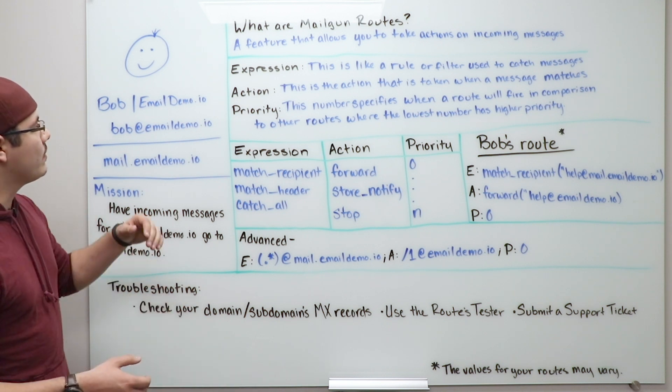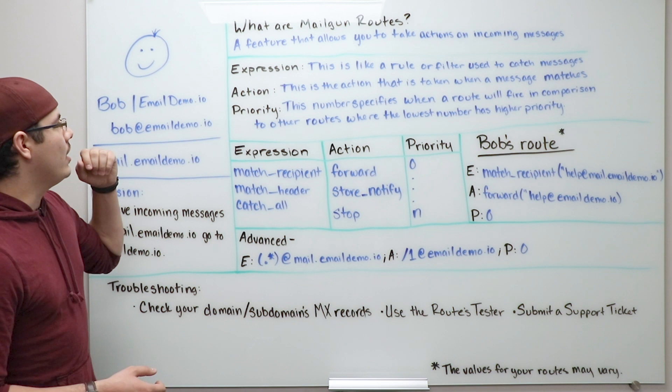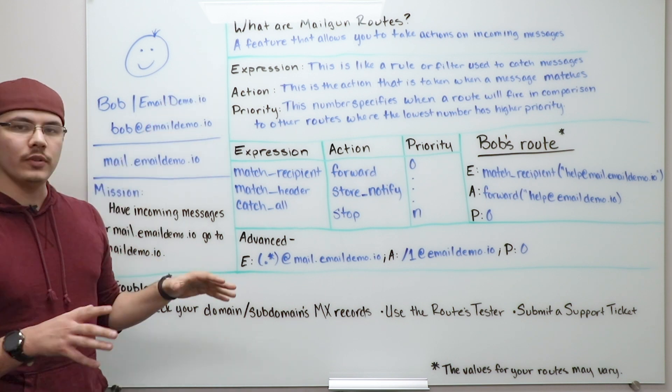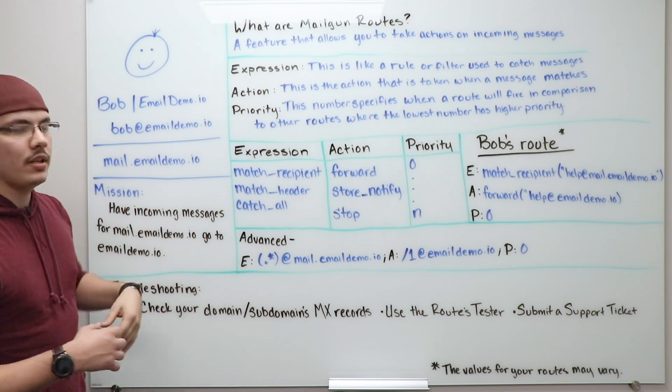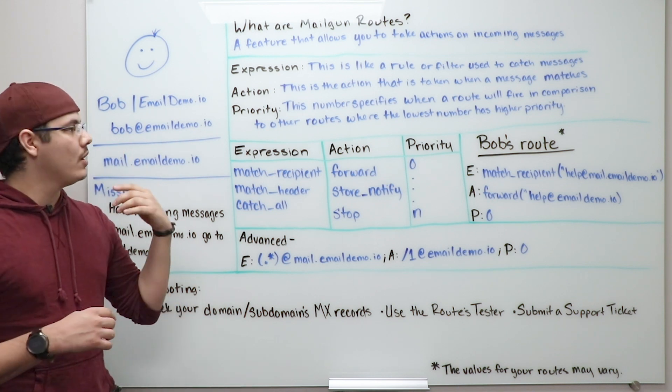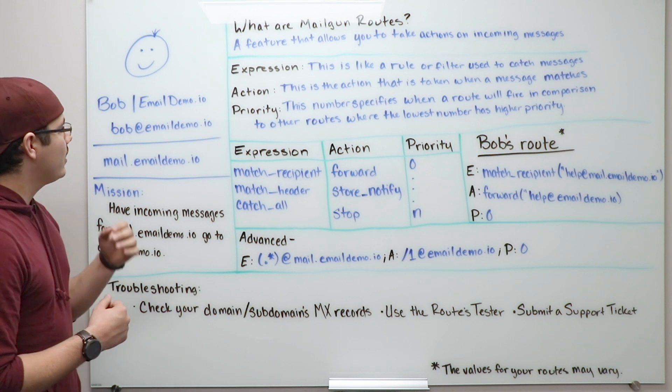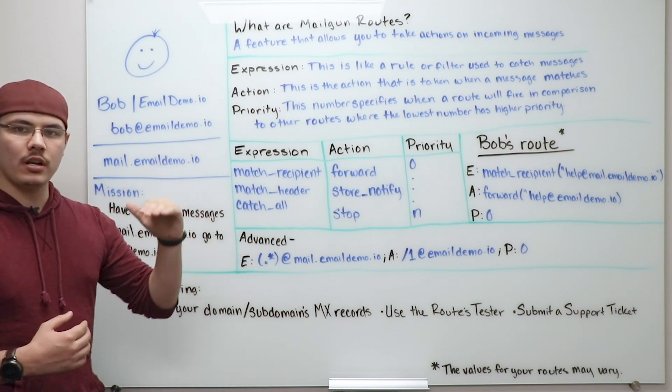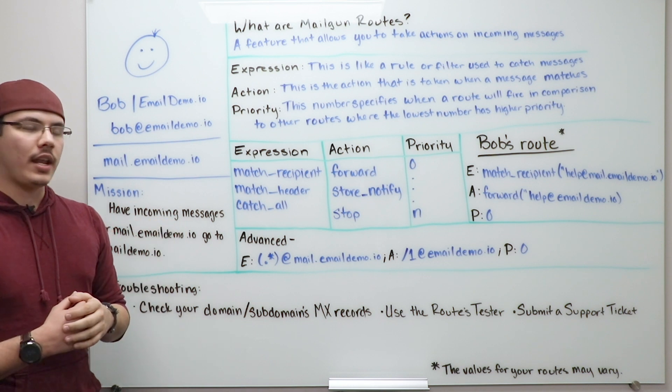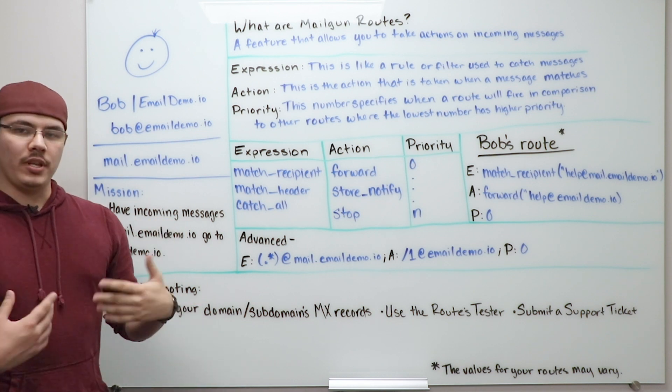So a route is comprised of three different things: an expression, which is like a rule or filter used to catch messages that are coming in; an action, this is the action that is taking place after we've already caught the message; and the priority is basically just a number that specifies where and when it's going to take that action, with the lowest number being the highest priority.